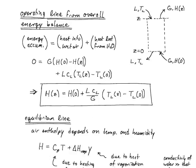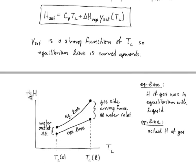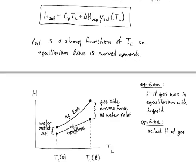On the operating line diagram, the vertical axis is enthalpy and the horizontal axis is temperature. TL sub zero is the cool outlet liquid temperature and the inlet liquid temperature is hot at the top of the tower. The operating line runs between these two enthalpy values. Note that the gas phase enthalpy is plotted: gas comes in at the bottom and leaves at the top, so the counter-current flow regime must be kept in mind.